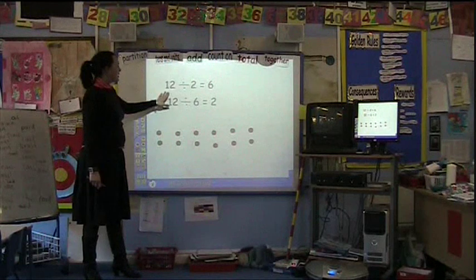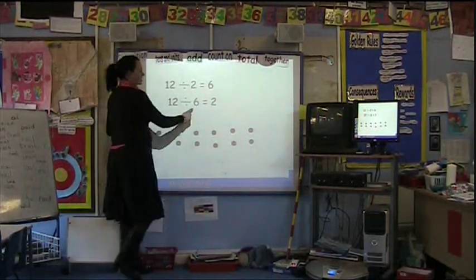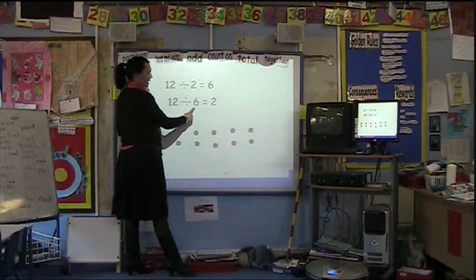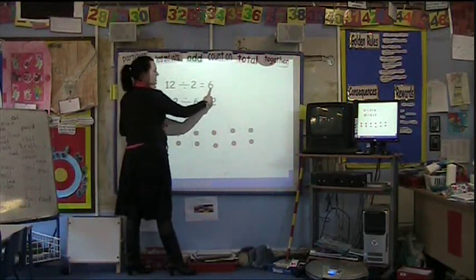So once we know that 12 divided by 2 equals 6, we would ask the children to look at the number that we have divided it by, so originally we divided it by 2, and the answer was 6.